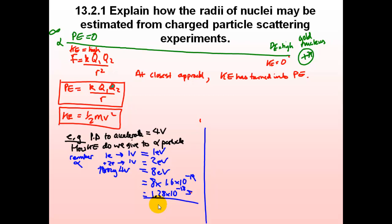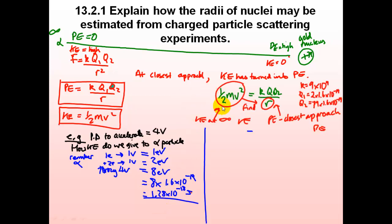This is the kinetic energy that is turned into potential energy. This will be equal to the potential energy when it's closest to the nucleus. So this kinetic energy turns into this potential energy, and from that we can find out R.